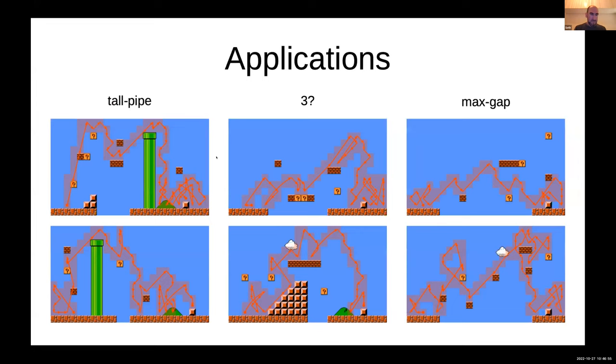We also looked into several applications because you can layer more constraints on top of this. This is a constraint that says I wanted a pipe that's exactly this tall. Or you can say I want three question mark blocks in the level. Note that they don't have to be reachable and they look like they aren't in some of these cases.